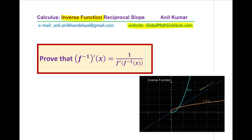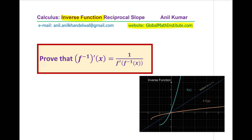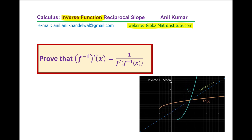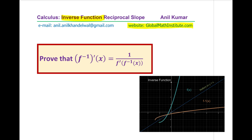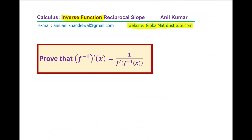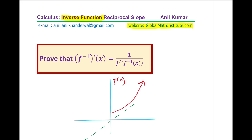Now before getting into the details of the formula itself, let us try to understand what it is saying: prove that the derivative of the inverse function is equal to 1 over the derivative of inverse of the function. It really means that if I take a function — for example, one side of a parabola — the inverse of this function will be a square root function which you could draw by reflecting it on the line y equals x.